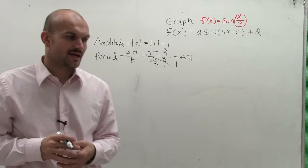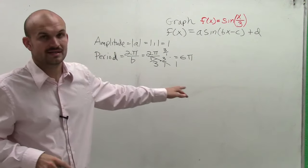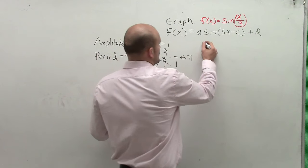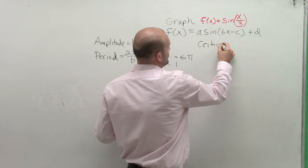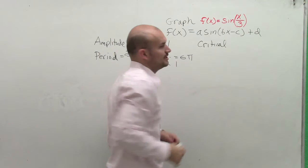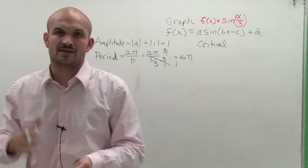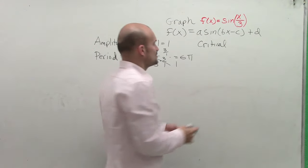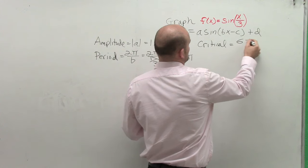Now, the next thing I want to do is, once I know what my period is, I always want to find my critical points. So to find the critical points, and remember, the critical points were going to be your maximum, your min, your x intercepts. So the critical points, what you want to do is you want to take your period and now divide it by 4.